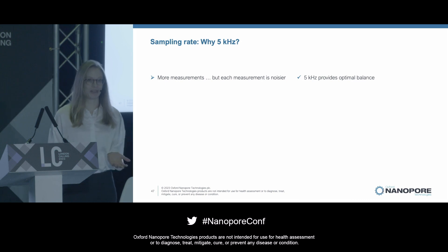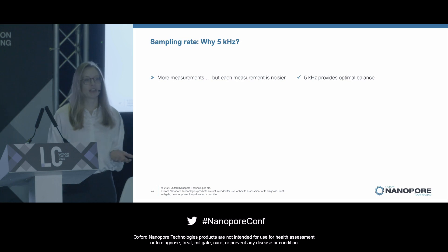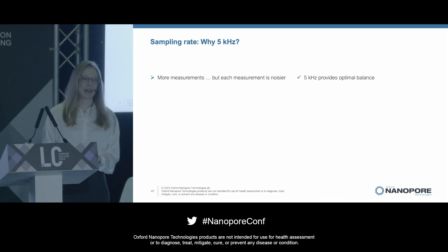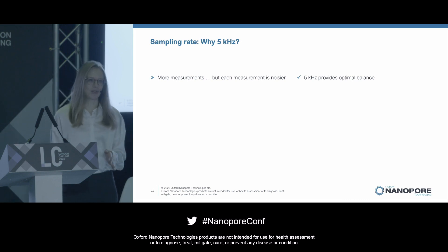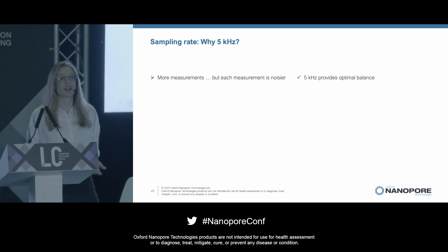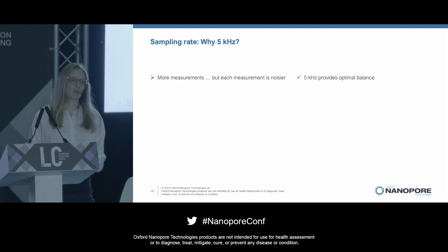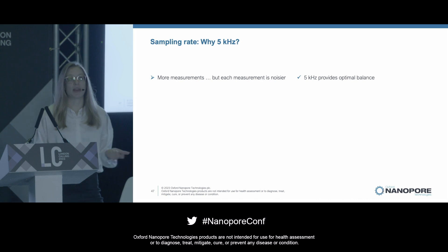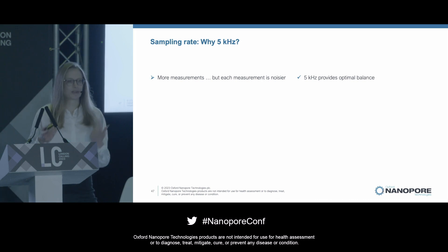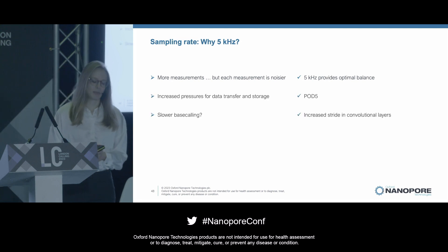More measurements sounds great — why not crank up the sampling rate as high as it can go? Unfortunately, at a higher sampling rate, each individual measurement is noisier, and not in a simple way where we can just average out that noise over the additional measurements. The noise comes from intrinsic features of the electronics and sensors in a way that's complicated and nonlinear with the sampling rate. So there's an intermediate sampling rate where we get the most benefit without the impact of that noise. For our signal and our devices, we found that 5 kilohertz gives us that great balance.